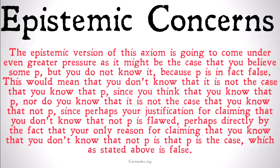The epistemic version of this axiom is going to come under even greater pressure, as while it might be the case that you believe some P but you do not know it, because P is in fact false. Imagine you believe a certain P, but you do not know it, because P is in fact false. This would mean that you do not know that it is not the case that you know that P, since you think that you know that P — so you don't know that it is not the case that you know that P, because you believe that you know that P. So you can't know that it is not the case that you know that P.